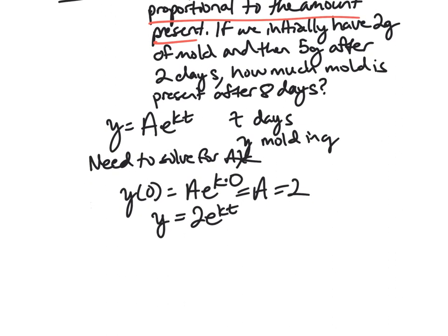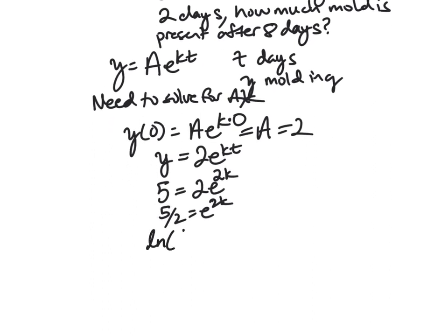And next, we want to plug in this two days and five grams. So we know that y is five when t is two. So we have 2e to the 2k. And so here, we just need to solve for k. So what we want to do is isolate the e to the 2k and use the natural log to kind of get rid of the e and get the 2k down. So we'll have five halves is e to the 2k. Take the natural log of each side. Got natural log of five halves is 2k. And then k is natural log of five halves over two. So this is our growth constant.